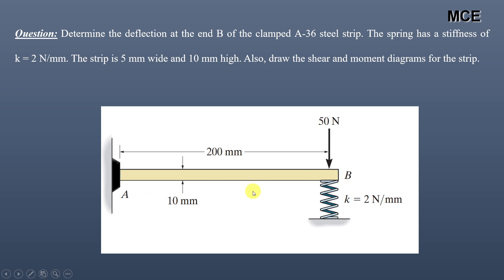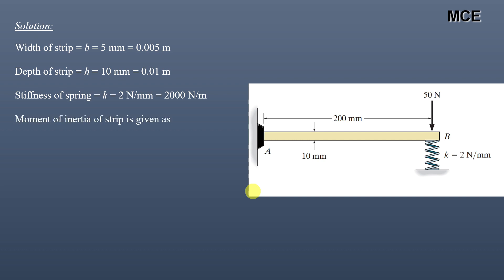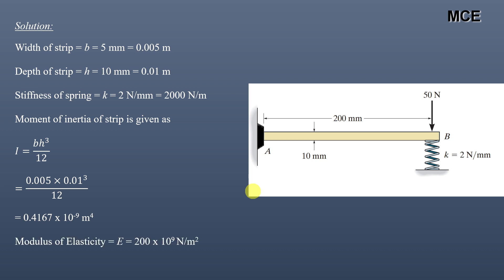From the given data: width b = 5 mm (0.005 m), depth h = 10 mm (0.01 m), spring stiffness k = 2 N/mm = 2000 N/m. The moment of inertia is I = bh³/12 = (0.005 × 0.01³)/12 = 0.4167 × 10⁻⁹ m⁴. The modulus of elasticity for A36 steel is E = 200 GPa = 200 × 10⁹ N/m².